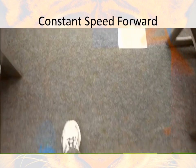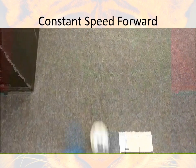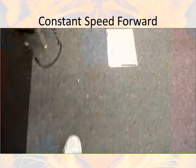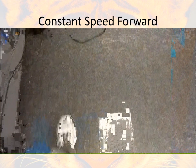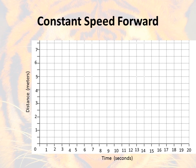Now let's try one where I start at zero and move away. I'm at two meters away, three meters, four meters, five meters — and it took me about 13 seconds. To graph this: I put a dot at zero meters at zero seconds, then at 13 seconds I went a total distance of six meters, so I put a dot there. When we draw the line, you can see it's different than when I was at rest — the line now goes upward to the right.